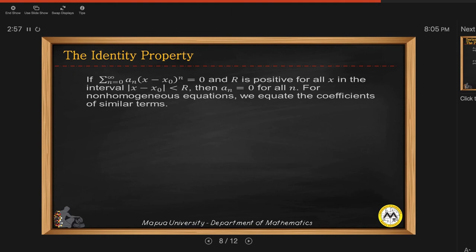So in the solution using the power series, if the summation or if the power series is equal to 0, then r is positive for all x in this interval, then your a sub n is equal to 0 for all values of n. And for non-homogeneous equations, we equate the coefficients of similar terms.